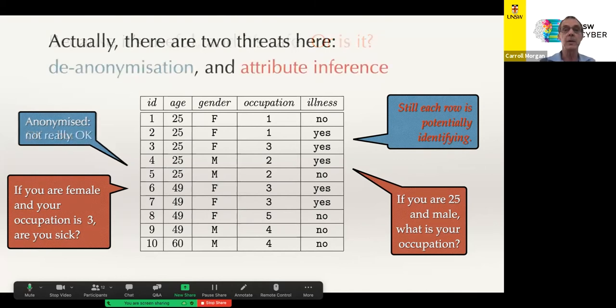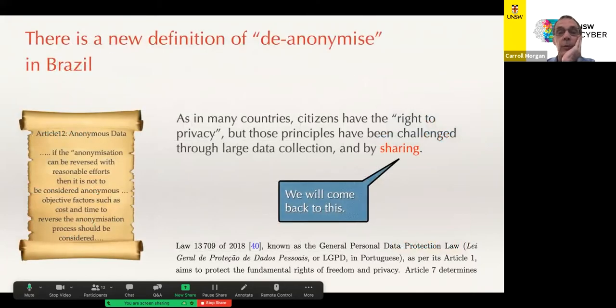So these are the kind of things that go on. And the point I'm making here is that there are actually two kinds of threats that we're dealing with. De-anonymization, which is when you find out who actually belongs to a particular row, and the attribute inference, where even without knowing who the person is, you can conclude that if they have certain characteristics, then they are quite likely to have other ones. So this is the situation that we have been dealing with, all of us, for decades. And what's happened recently in Brazil and in other places, but this is a study from Brazil, is that they have formulated a law and it comes into effect this year.